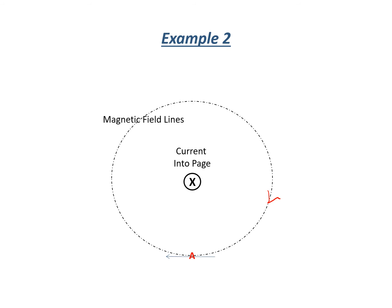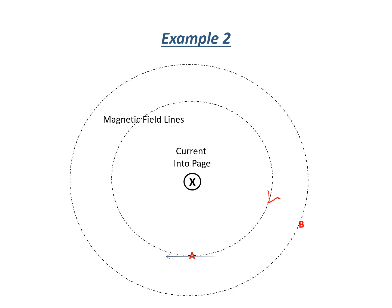Now we look at point B — what is the direction of the magnetic field at point B? Same approach: draw a circular ring large enough to go through point B. Using the right-hand grip rule, the thumb points in the direction of the current into the page, and the fingers go around the wire, so the magnetic field is also in the anti-clockwise direction. Step 3: a tangential line at point B gives the direction of the magnetic field at B.